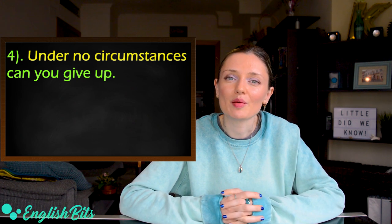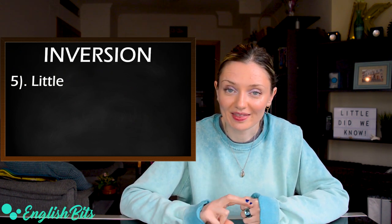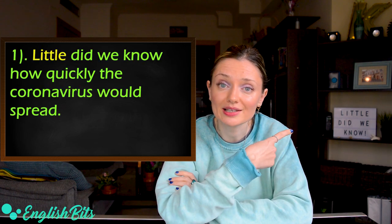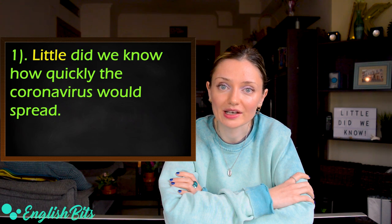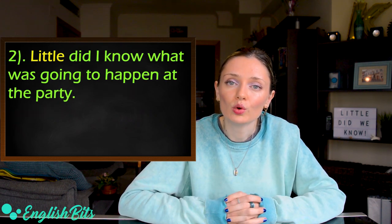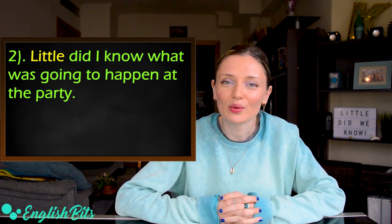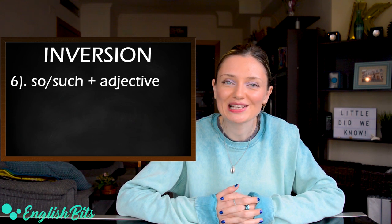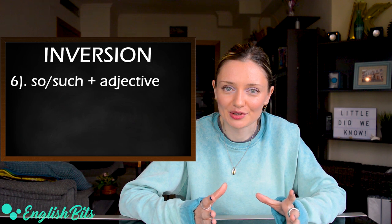Let's continue. Number five, we use inversion after little. And now two examples. The first one, little did we know how quickly the coronavirus would spread. And one more example, little did I know what was going to happen at the party. And now let's move on to our case number six, which is so and such plus an adjective.